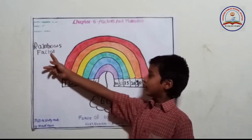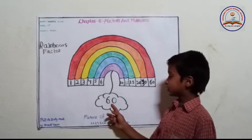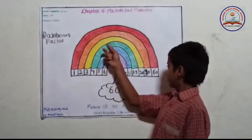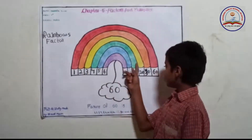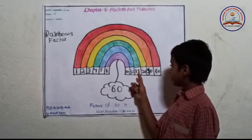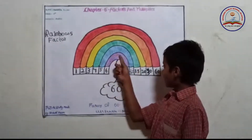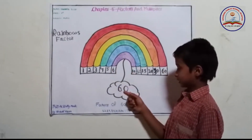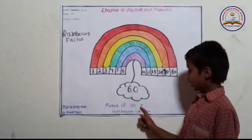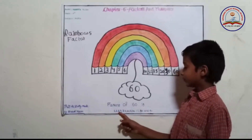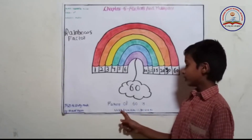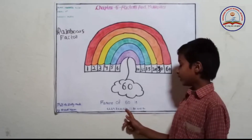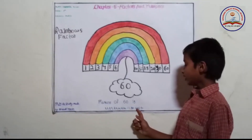I took number 60. 1 × 60 = 60, 2 × 30 = 60, 3 × 20 = 60, 4 × 15 = 60, 5 × 12 = 60, 6 × 10 = 60. Factors of 60 are: 1, 2, 3, 4, 5, 6, 10, 12, 15, 20, 30 and 60.